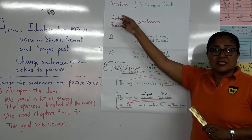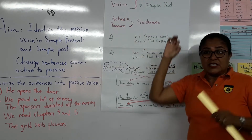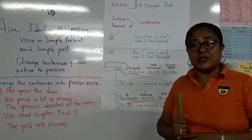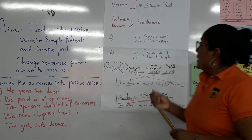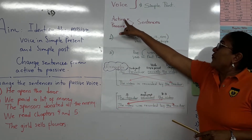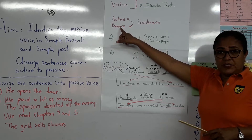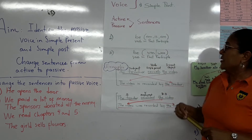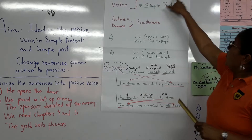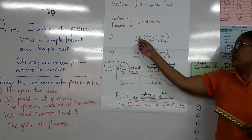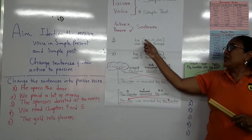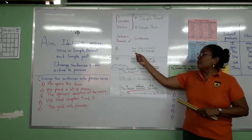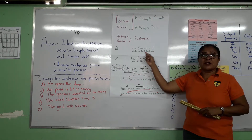When we have active sentences, the relevance of the sentence is in the subject. When we change from active to passive, the relevance goes to the direct object. In the simple present, we have to use the form of 'be' in the simple present — am, is, are — and the verb in the past participle.